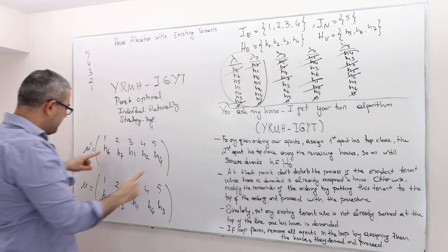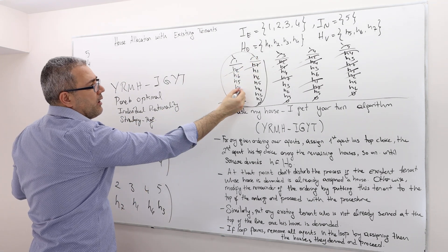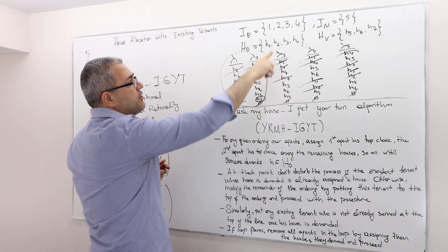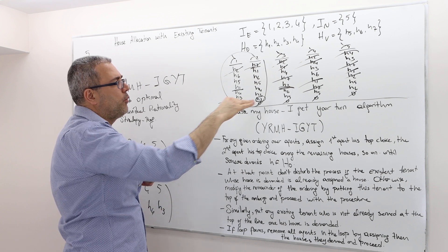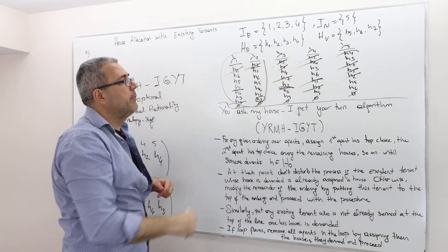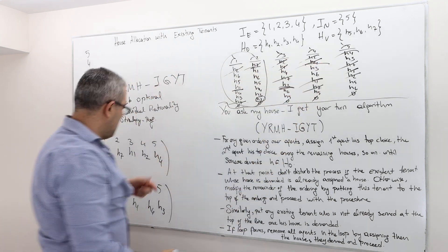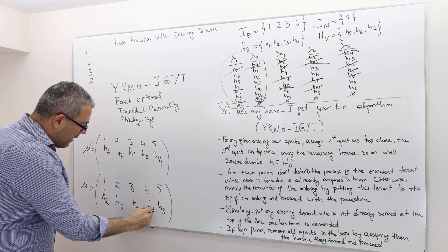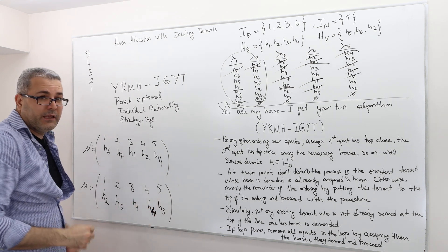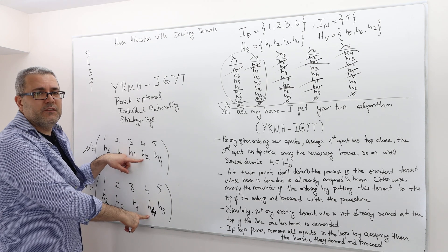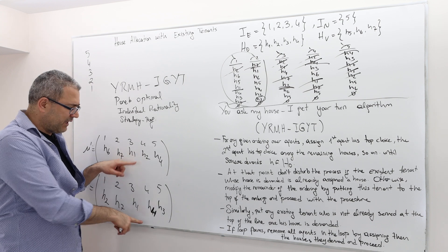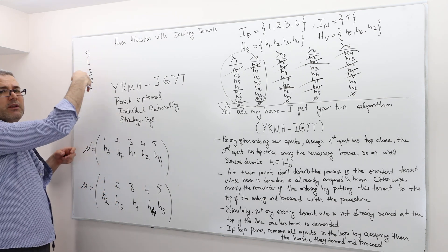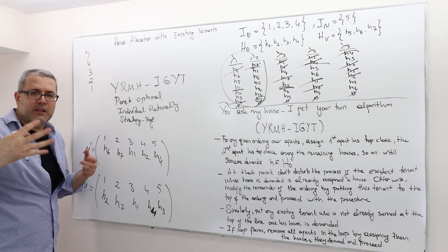For example, agent 1 gets H6 or H2, both better than H1. Agent 2 gets H7, better than H2. Agent 3 gets house 1, better than his initial house. Agent 4 gets his own house H4 or something at least as good. So nobody gets worse off — the mechanism satisfies individual rationality regardless of the ranking the authority selects.